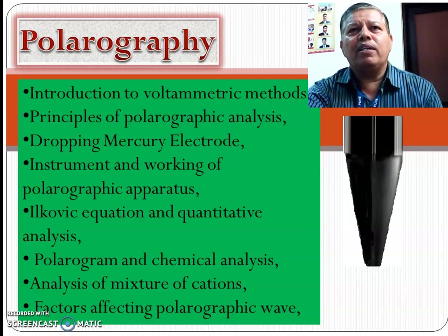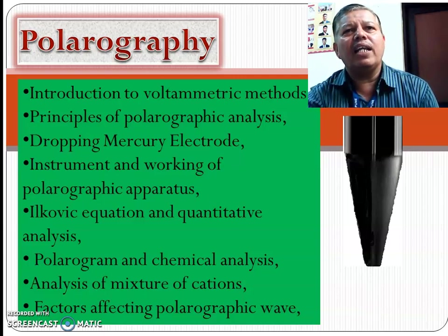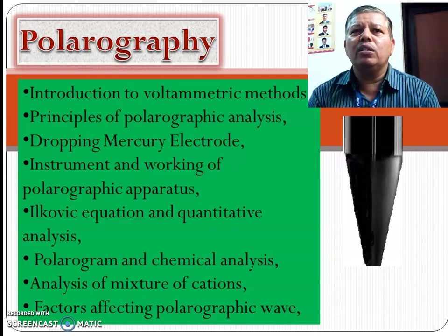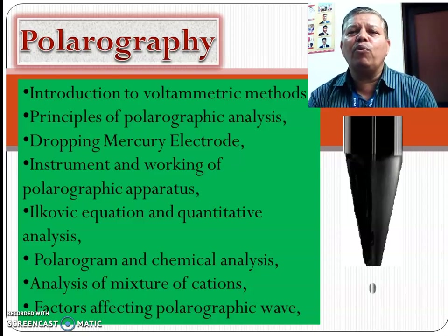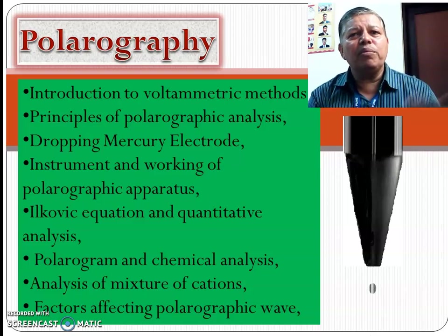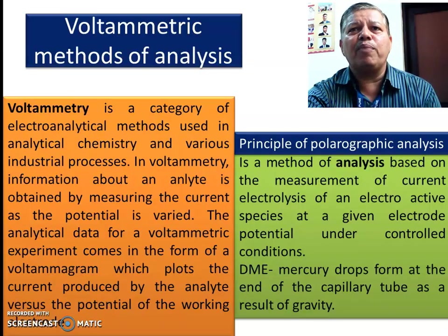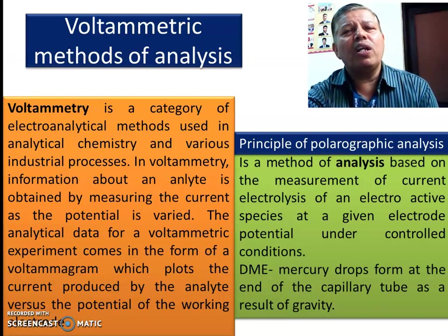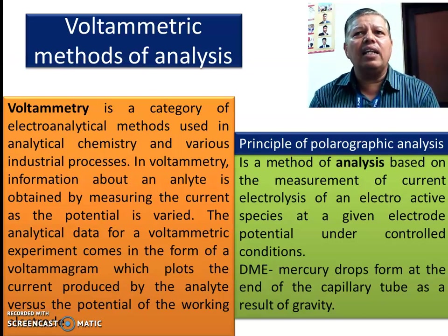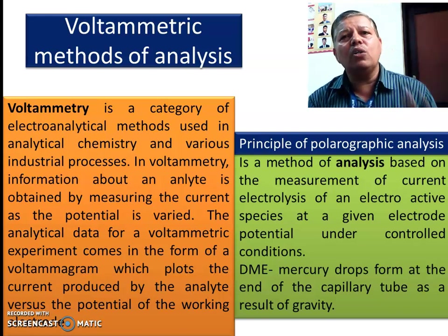In this topic we must know the automatic methods, principle of the polarographic analysis, dropping mercury electrode, instrumentation and working of the polarographic apparatus, the Ilkovic equation for determination of quantitative analysis, polarogram for chemical analysis, analysis of the mixture of cations, and some factors affecting the analysis. Voltammetric methods is a method of analysis based on electrolysis of electroactive species at a given electrode potential under controlled conditions.